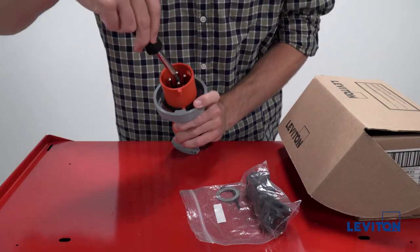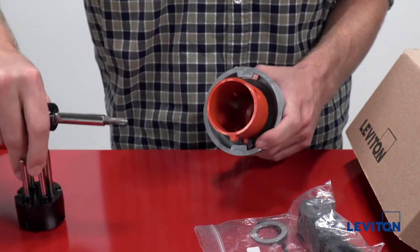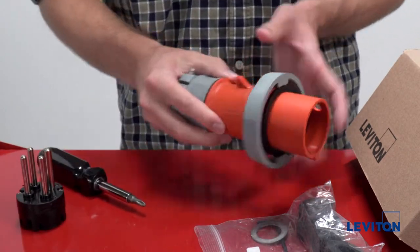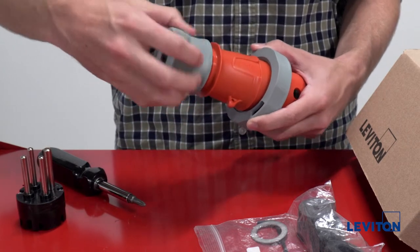Using a screwdriver, unscrew the two assembly screws on the contact carrier and remove it from the housing. Unthread the clamp assembly with your hands to remove it from the housing.